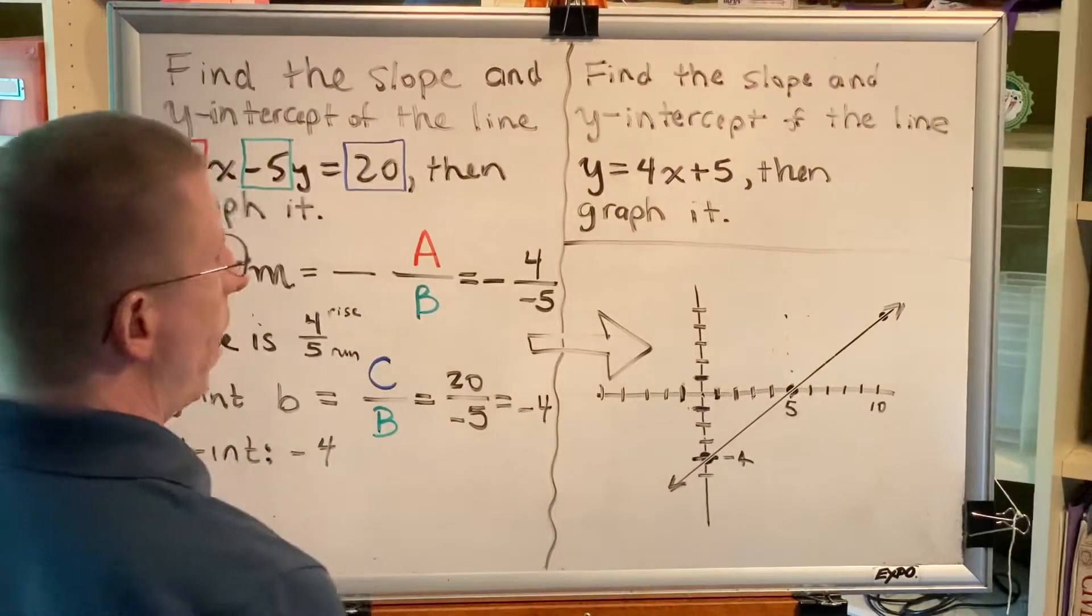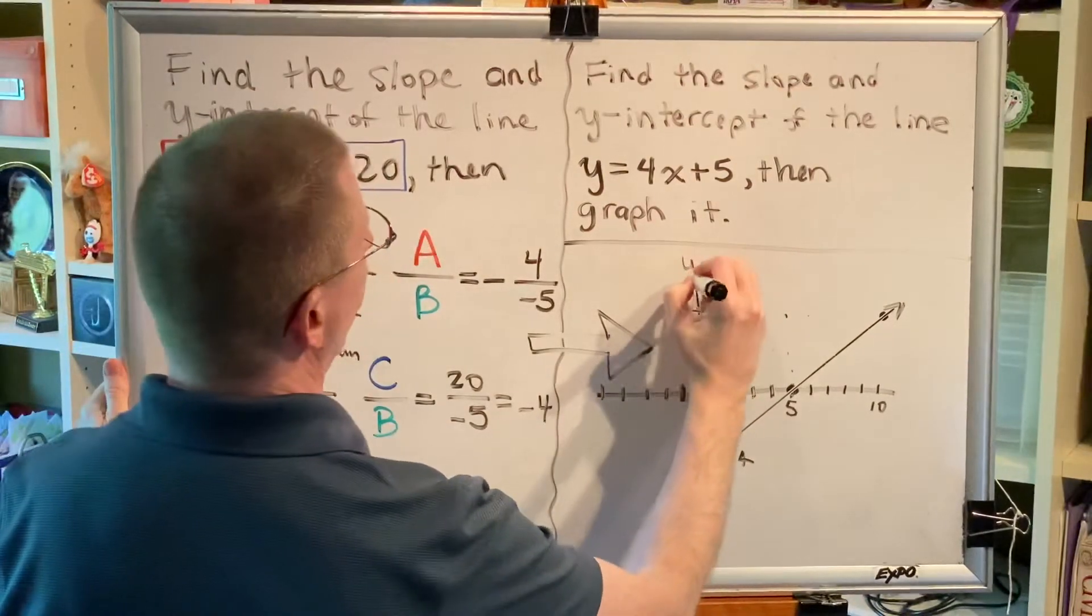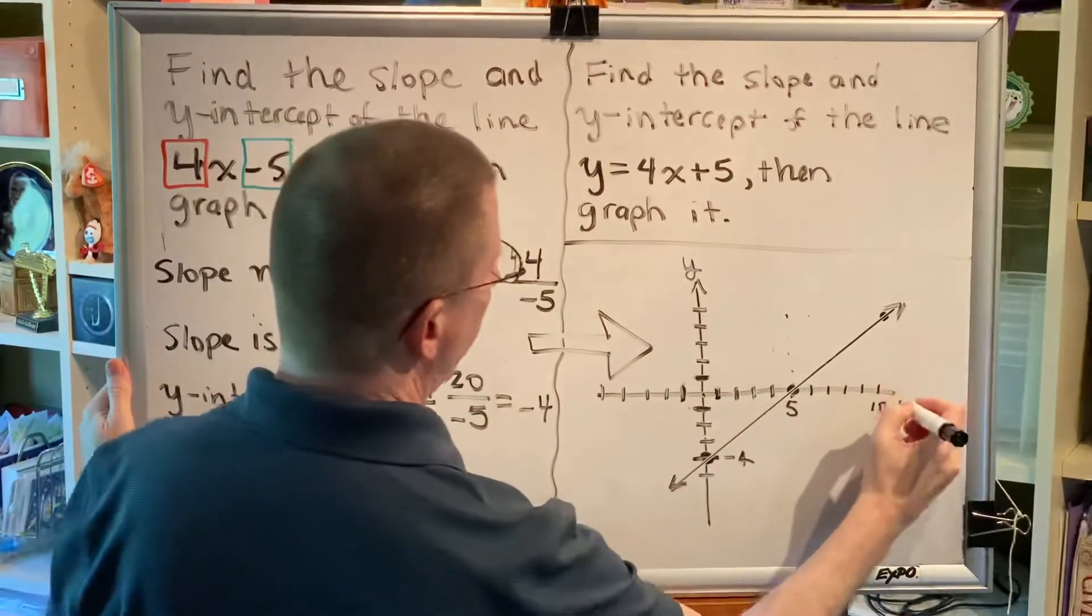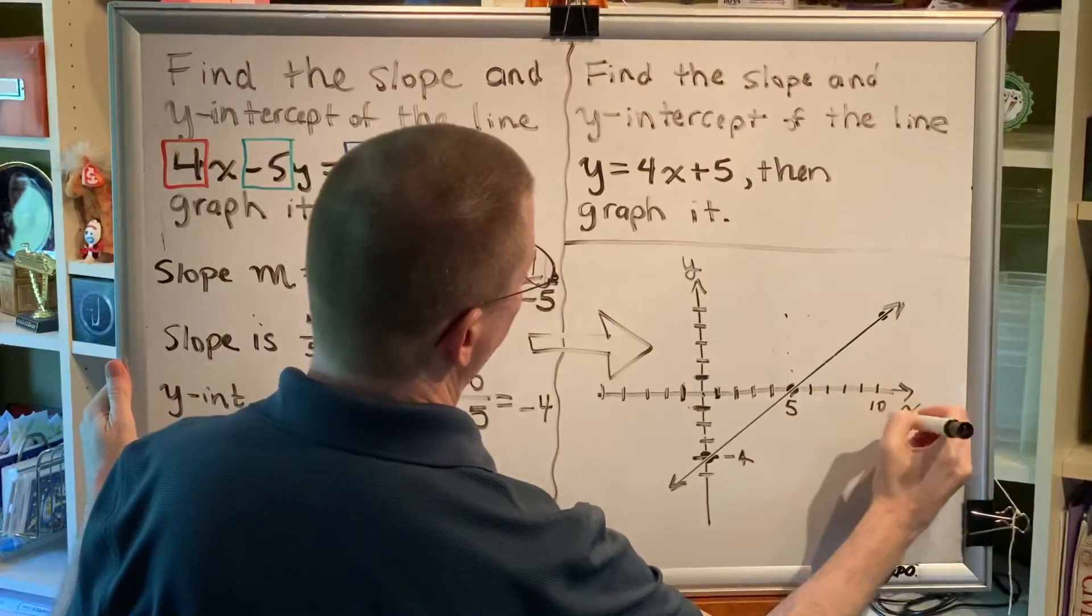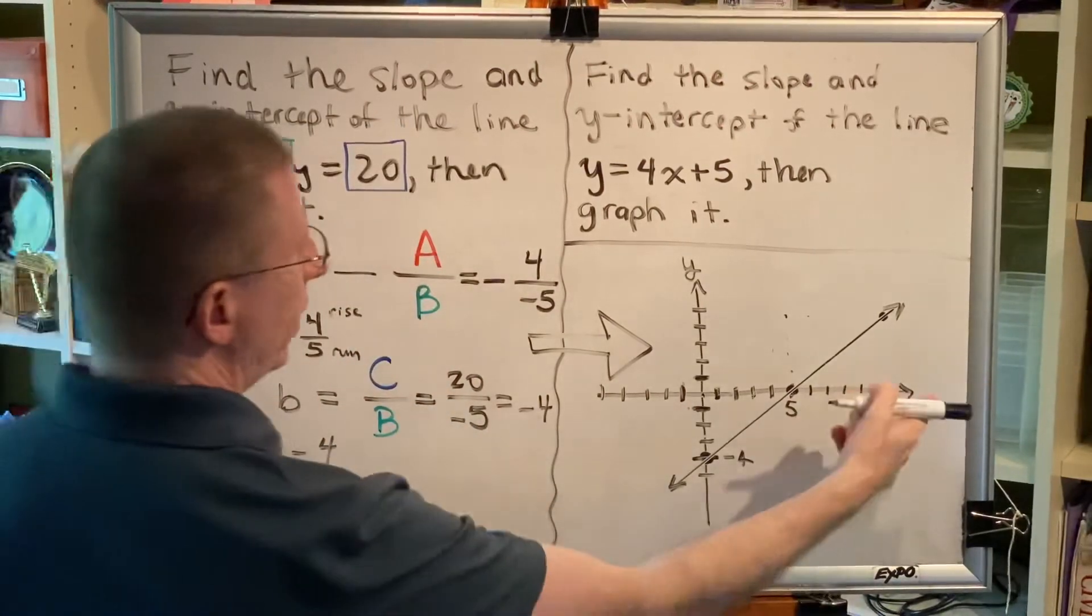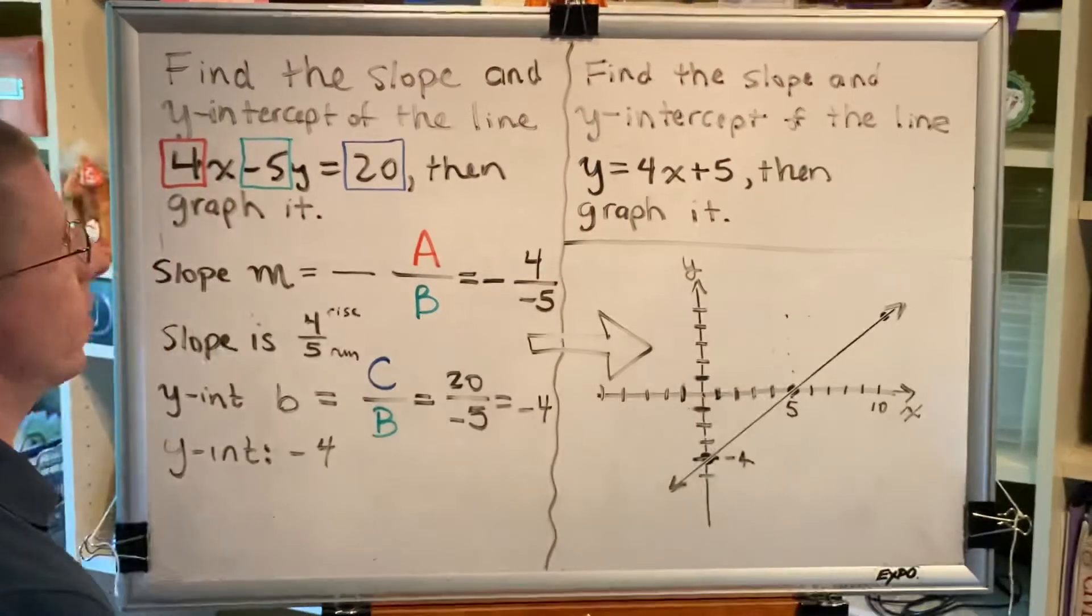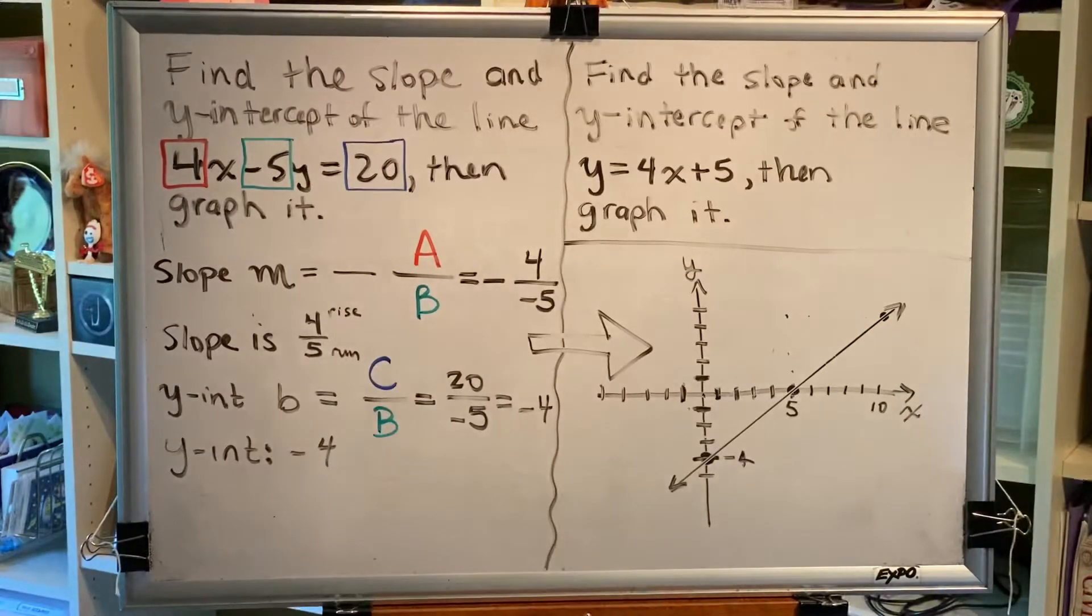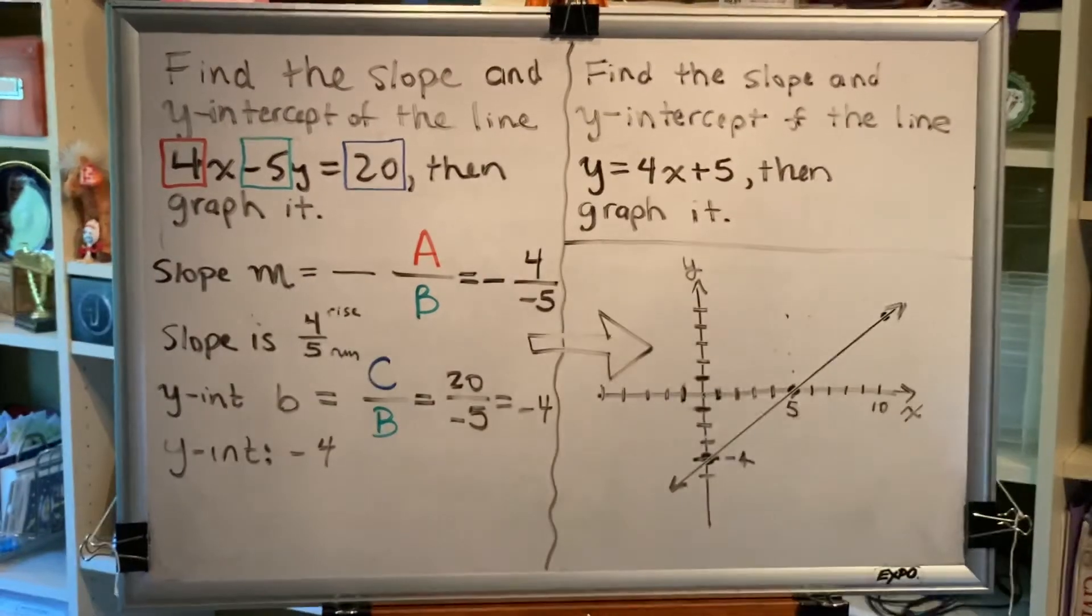All right, and then put the finishing touches on your graph. Y on the positive y side, x on the positive x side, and make sure you have at least one number on both the x and y-axis to set the scale. All right, great. We've now completed this problem.